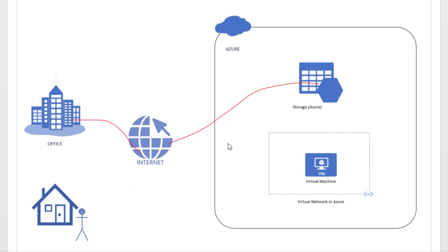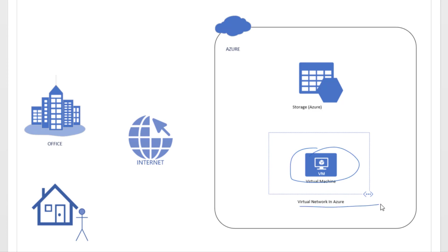For example, the data on the storage account should be accessible from a particular virtual machine that exists on a virtual network. The storage account should be accessible from this virtual machine, and anywhere else somebody tries to connect to this storage account, that connection should be denied and deemed as unauthorized.